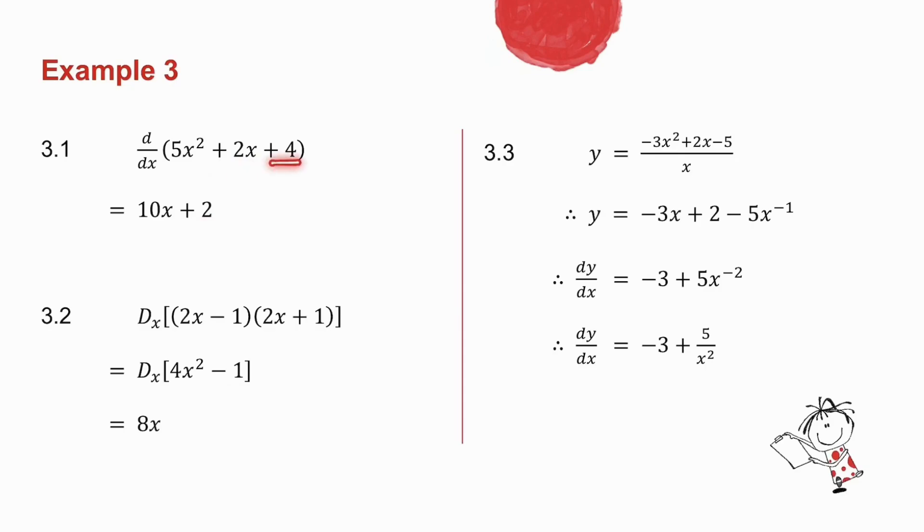The derivative of 4 is 0. Now this reads, what is the derivative of this expression? My answer is just 10x plus 2, because the derivative of this expression is 10x plus 2. So in my answer, the d by dx has gone.